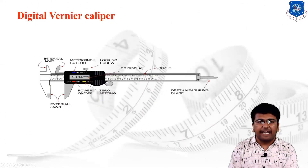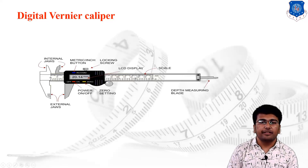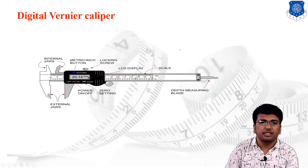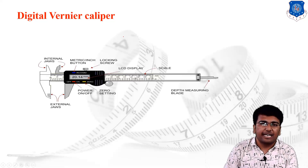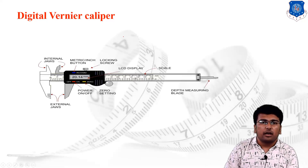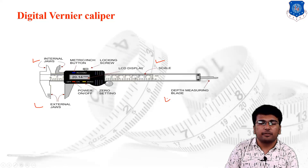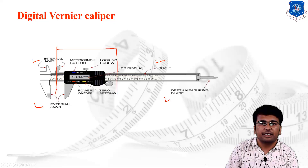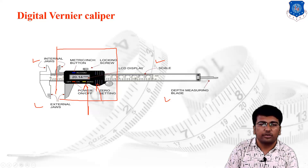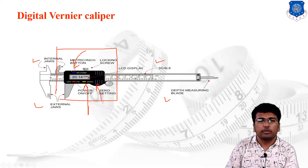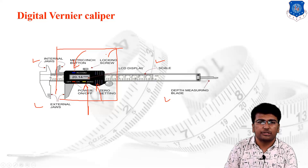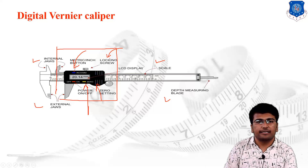The next type is the digital vernier caliper. The current era of modern industries is moving towards digitalization, so we have transitioned from conventional instruments to digital ones. All elements remain the same — internal and external jaws, scale, depth measuring blade — but the auxiliary scale has been replaced with a digital setup. A digital display is provided, along with a power on/off button, a zero-setting button, a scale conversion button to switch between metric and inch, and a locking screw to fix the auxiliary scale position on the main scale.